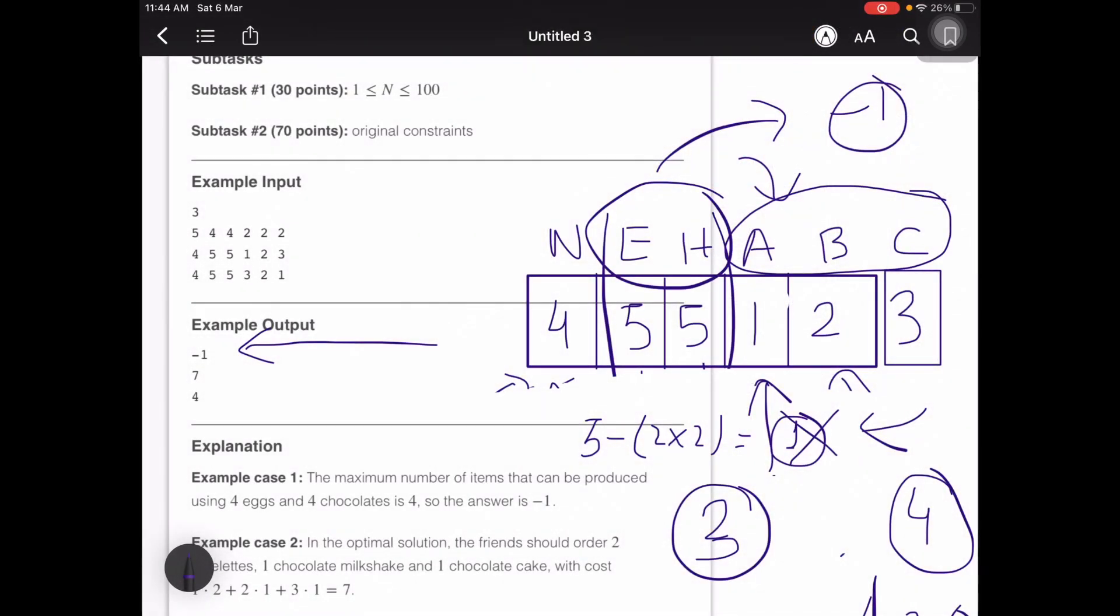First we have to check whether it is possible that we can create 4 dishes for 4 friends out of the remaining E and H eggs that we have. Then to optimize the solution we will just choose the items that have the least cost.